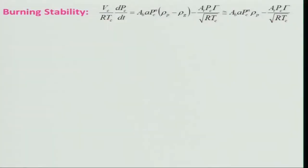What we will do now is carry out the analysis and look at another important aspect: burning stability. For burning stability, we need to look at the expression derived earlier. The equation V_C / (R T_C) · dP_C/dt represents the change in chamber pressure with respect to time, which is related to the amount of propellant being burnt — the burning surface A_B, chamber pressure P_C, and propellant density rho_P. Note that the gas density rho_G is negligible compared to rho_P.